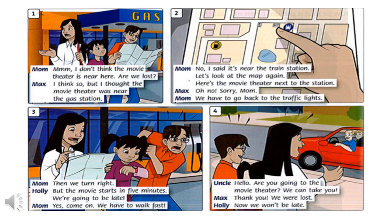I don't think the movie theater is near here. Are we lost? I think so. But I thought the movie theater was near the gas station. No. I said it's near the train station. Let's look at the map again. Here's the movie theater next to the station. Oh no. Sorry, Mom. We have to go back to the traffic lights.